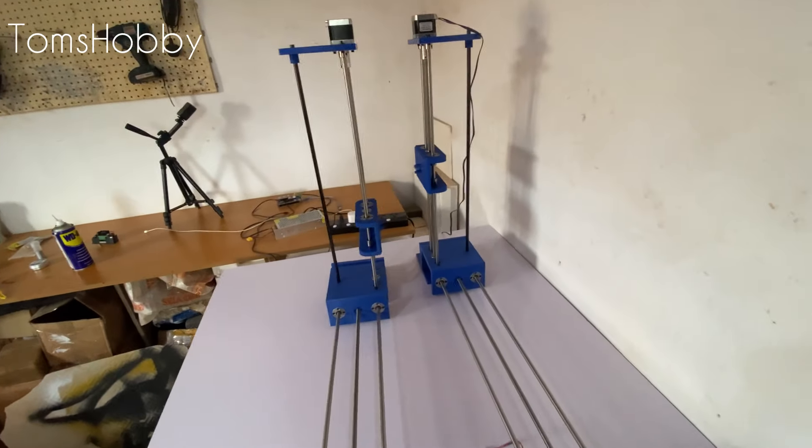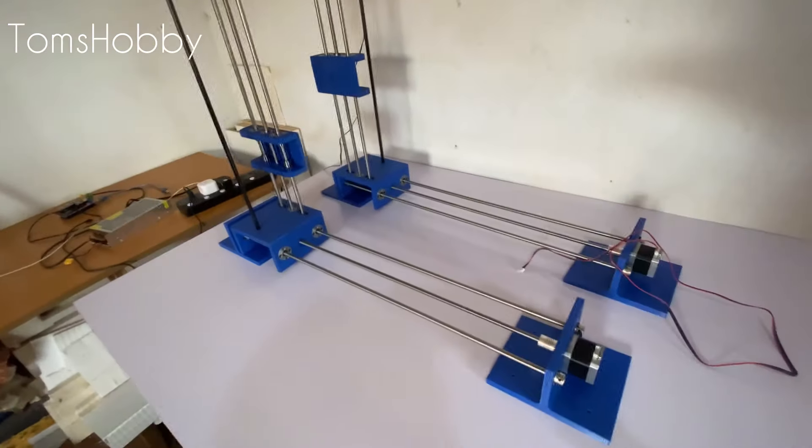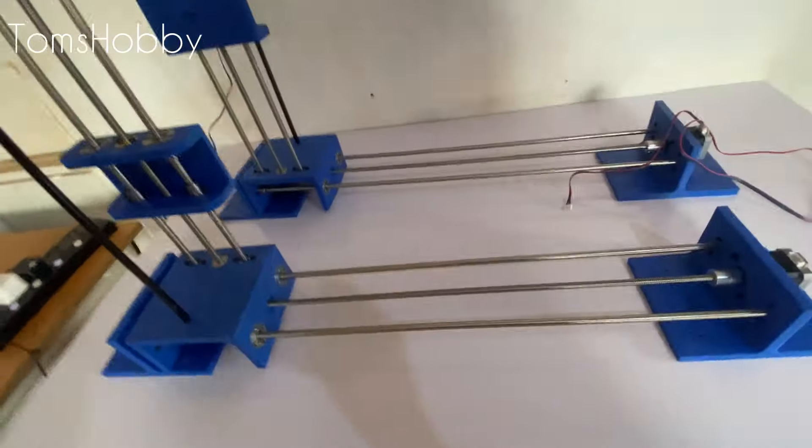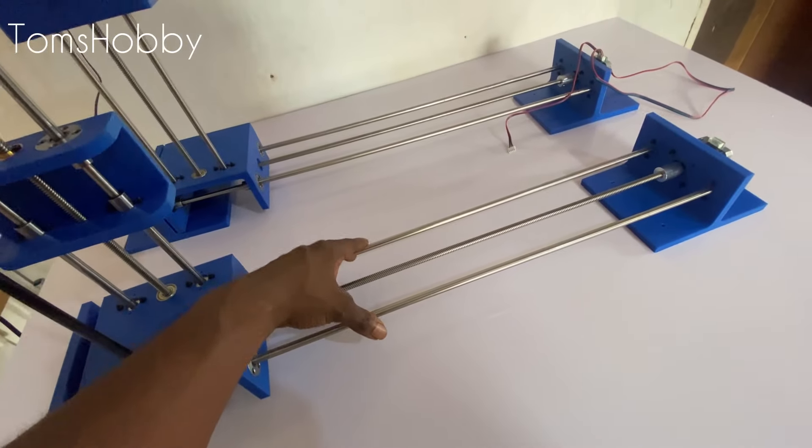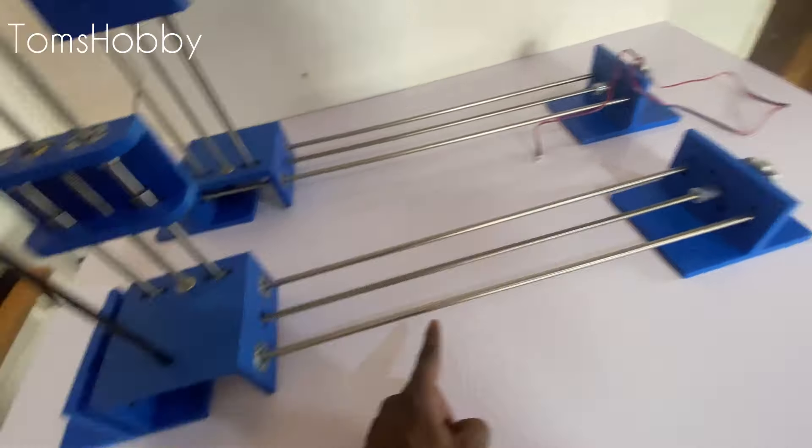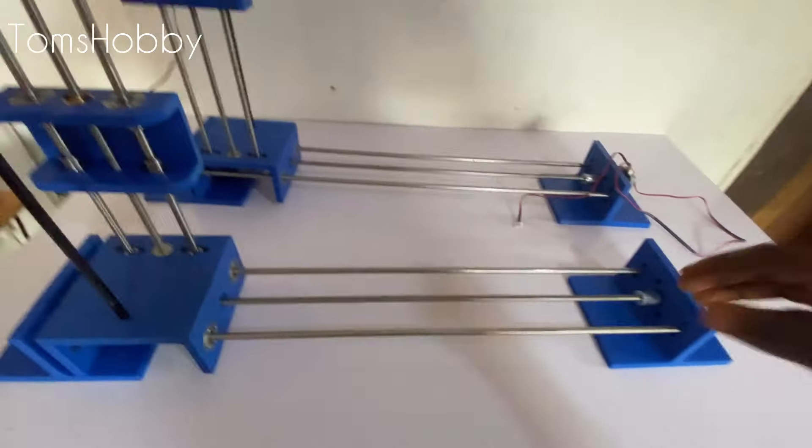There's a slight problem that I would like to address. It turns out that this 8 millimeter steel rod might be too thin for this length, because in the middle there's a flex. So when I move the gantry all the way to the middle...